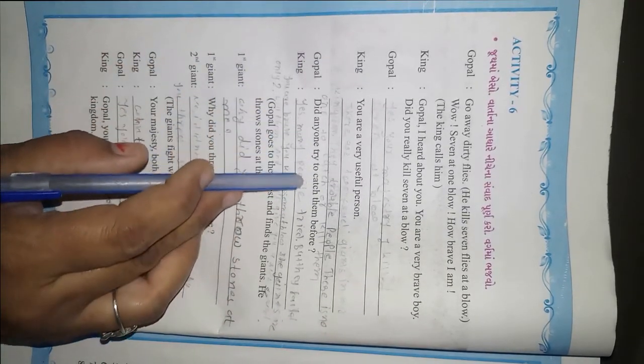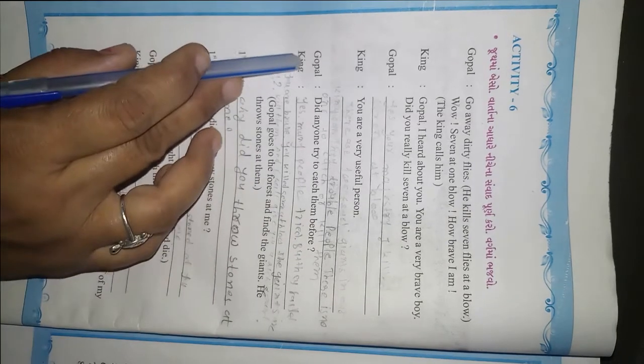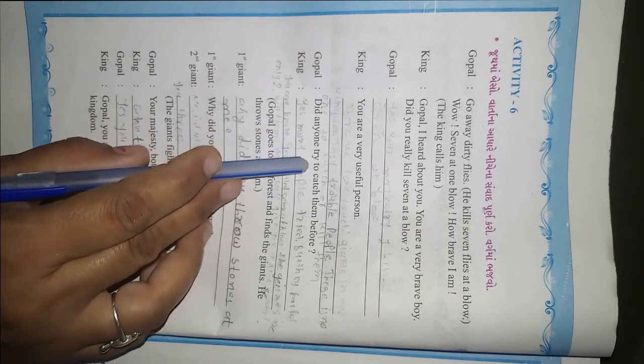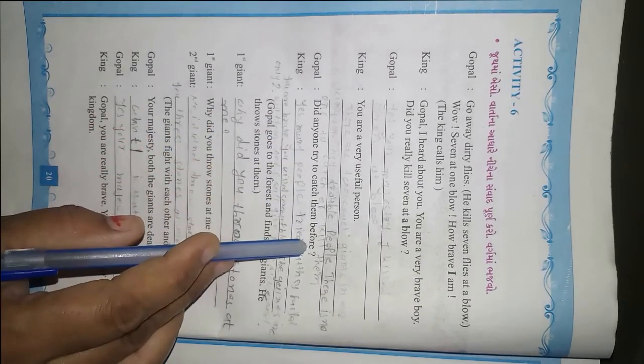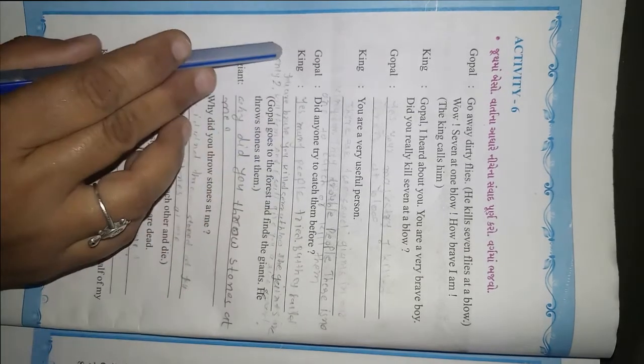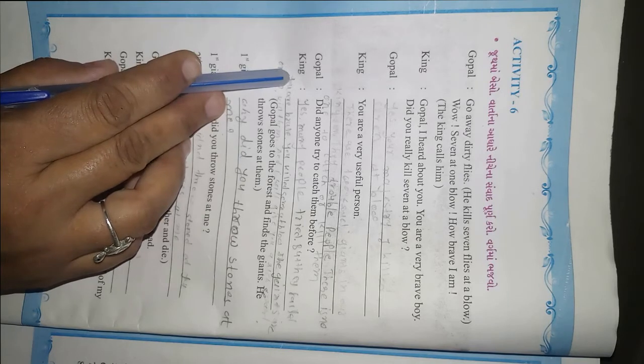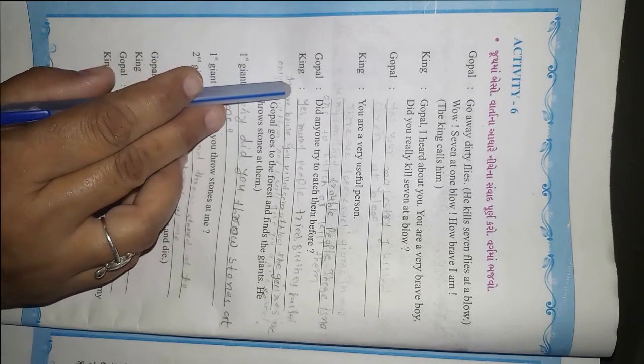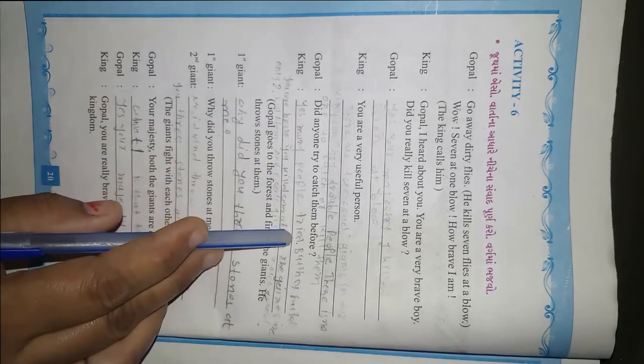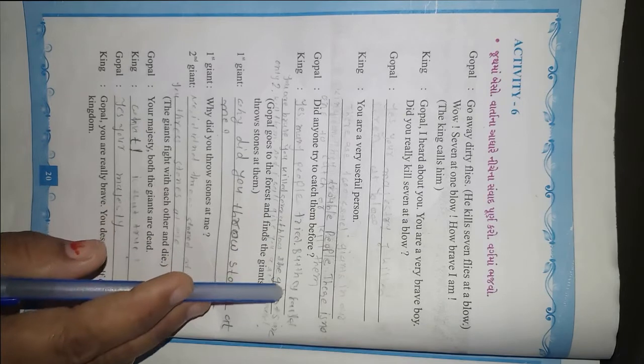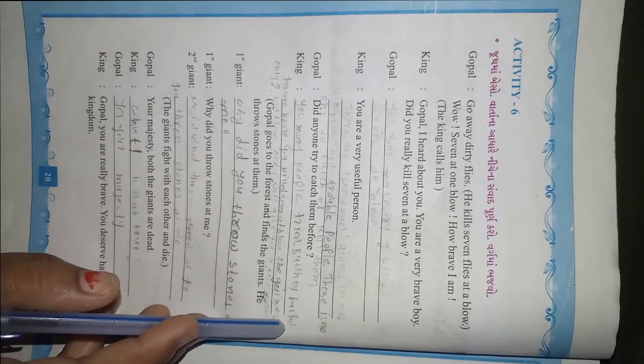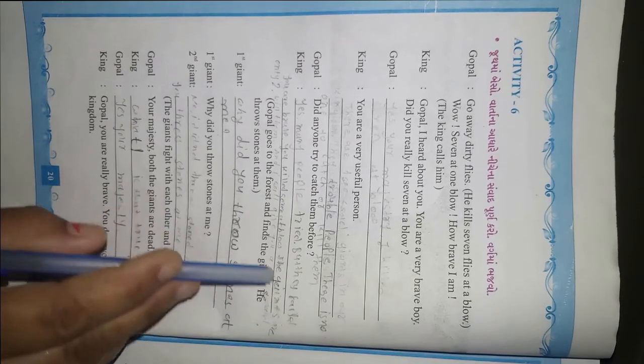Gopal asked, 'Did anyone try to catch them before?' The King said, 'Yes, many people tried, but they all failed. They didn't get them.' The King then said, 'You are brave, you killed seven at one blow.'